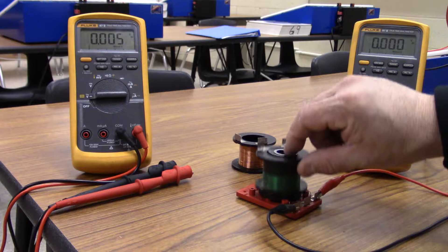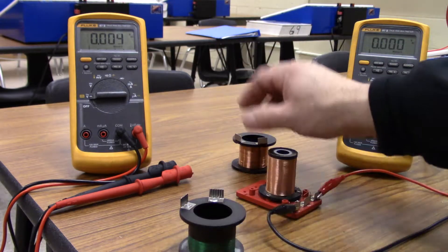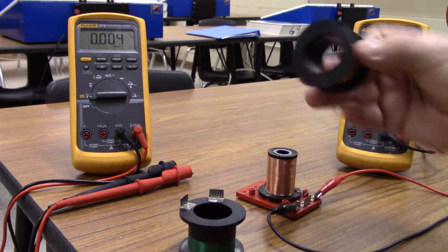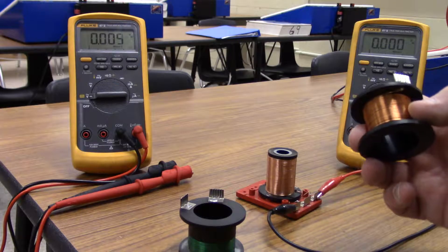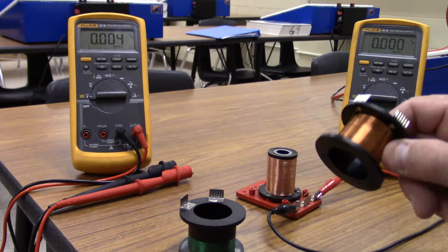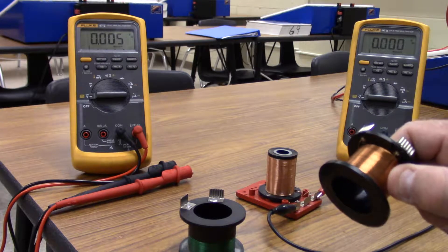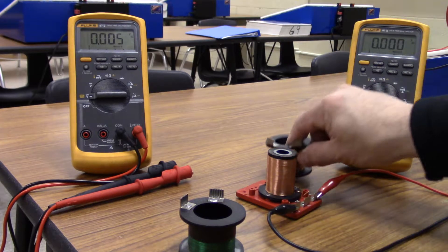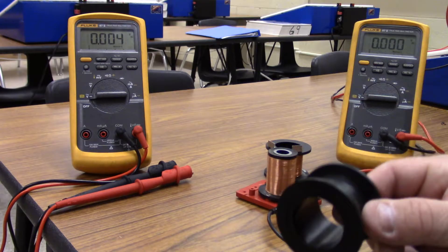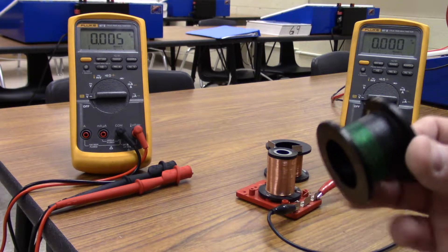Fitting over top of our core we have two different thimbles. The thimbles are made of plastic and then they have a wrap of copper wire on them as well. Our first one we're going to talk about here is a single wrap of copper wire over the thimble and the second one is multiple wraps.